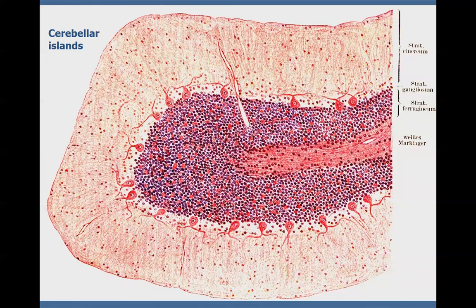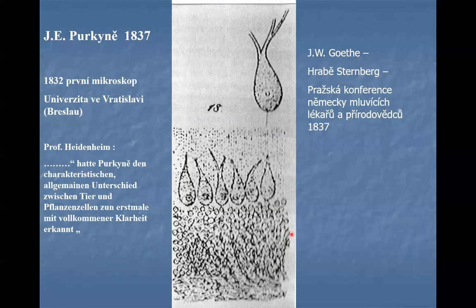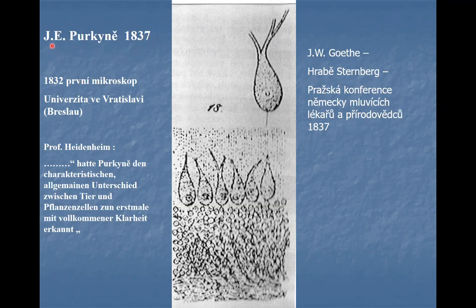Distances between individual Purkinje cells are approximately similar, without great differences. Purkinje cells were discovered in 1837. At that time, Purkinje was a student of Charles University, and after graduation he worked as professor of anatomy at the Anatomical Institute of the Medical Faculty. After ten years in Prague, he left and was appointed professor of physiology at the University of Breslau, which is recently in Poland and named Wratislav.